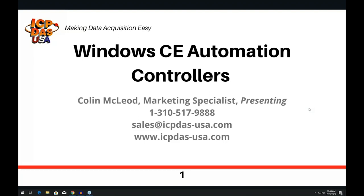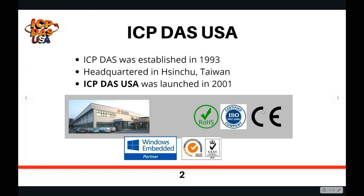Thank you everyone for attending today. We're going to be talking about our Windows CE automation controllers. ICP-DAS was established in 1993, with headquarters in Sinshu, Taiwan. ICP-DAS USA, located in Lomita, California, was launched in 2001 to support the North and South American markets. We have over 200 R&D engineers who work closely with them to add new features, develop new products, and support our customers. Most of our products are RoHS compliant, meaning they are lead-free.